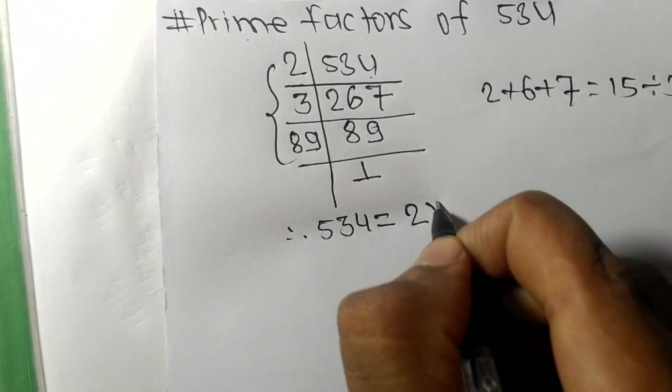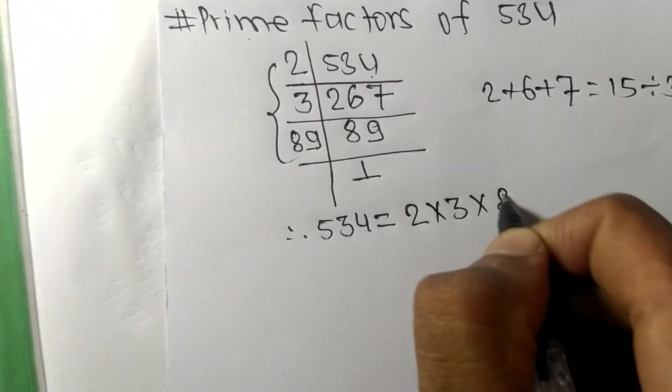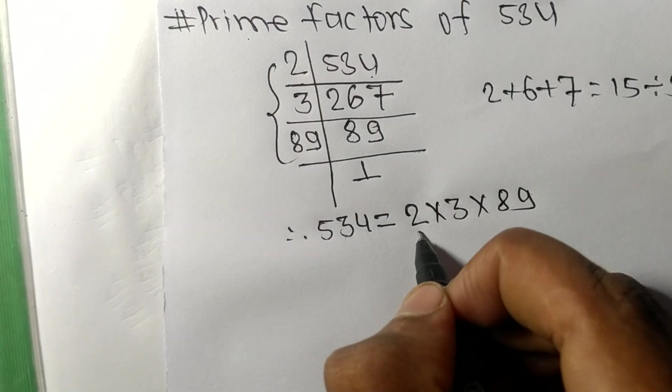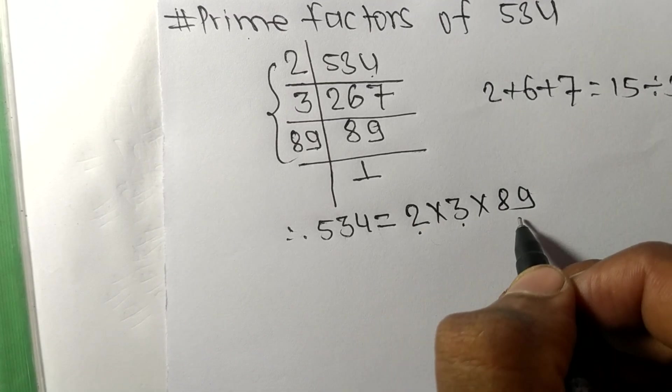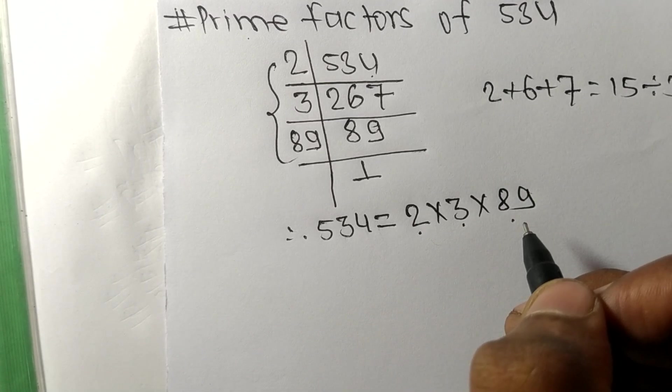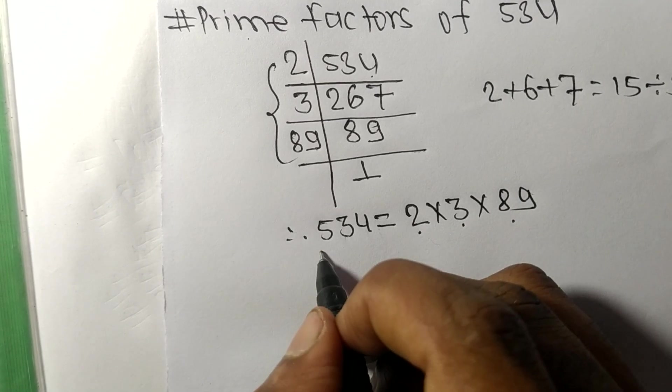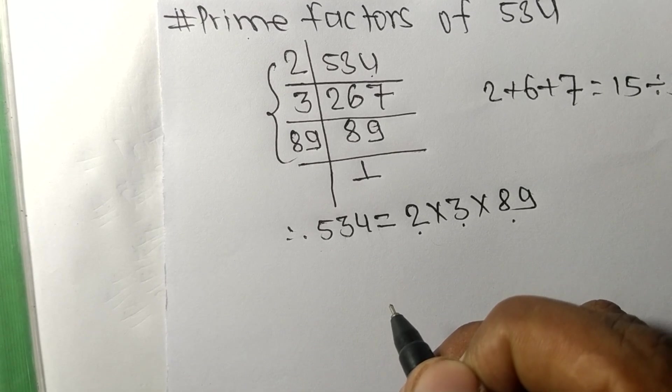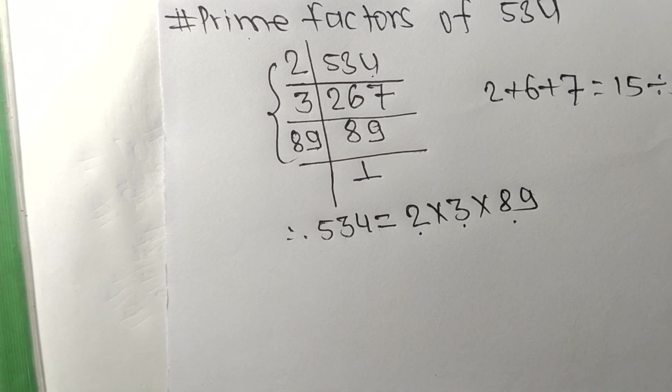So 2, 3, and 89 are the prime factors of 534. This much for today, and thanks for watching.